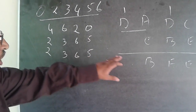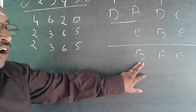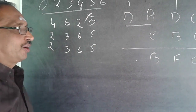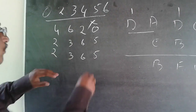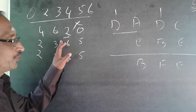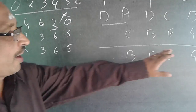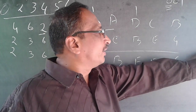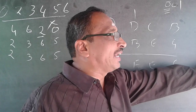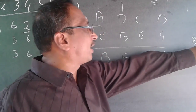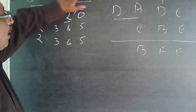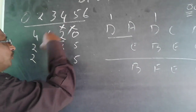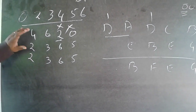B cannot be 0, so that option is ruled out. Supposing B is 2: from the equation B plus E ≥ 9, E should be at least 7 — but I don't have numbers 7 and above. Therefore B cannot be 2.